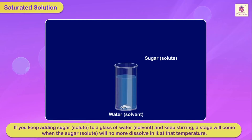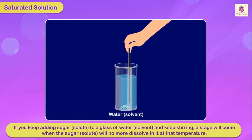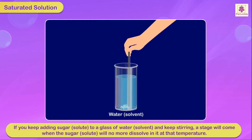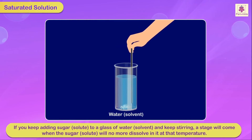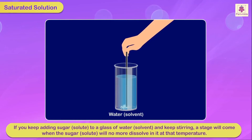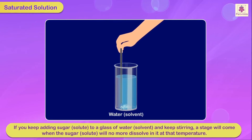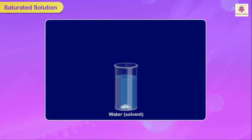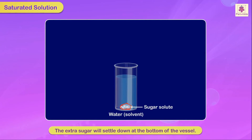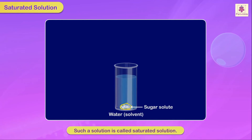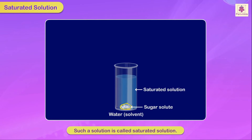If you keep adding sugar to a glass of water and keep stirring, a stage will come when the sugar will no longer dissolve at that temperature. The extra sugar will settle down at the bottom of the vessel. Such a solution is called a saturated solution.